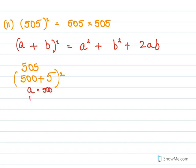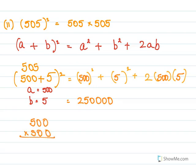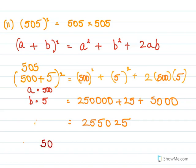We have a = 500 and b = 5. So we apply a² + b² + 2ab: a is 500, b is 5. 500 × 500 = 250000, b² = 5² = 25, and 2ab = 2 × 500 × 5 = 5000. When you add this up, you get 255025, which means 505² = 255025.